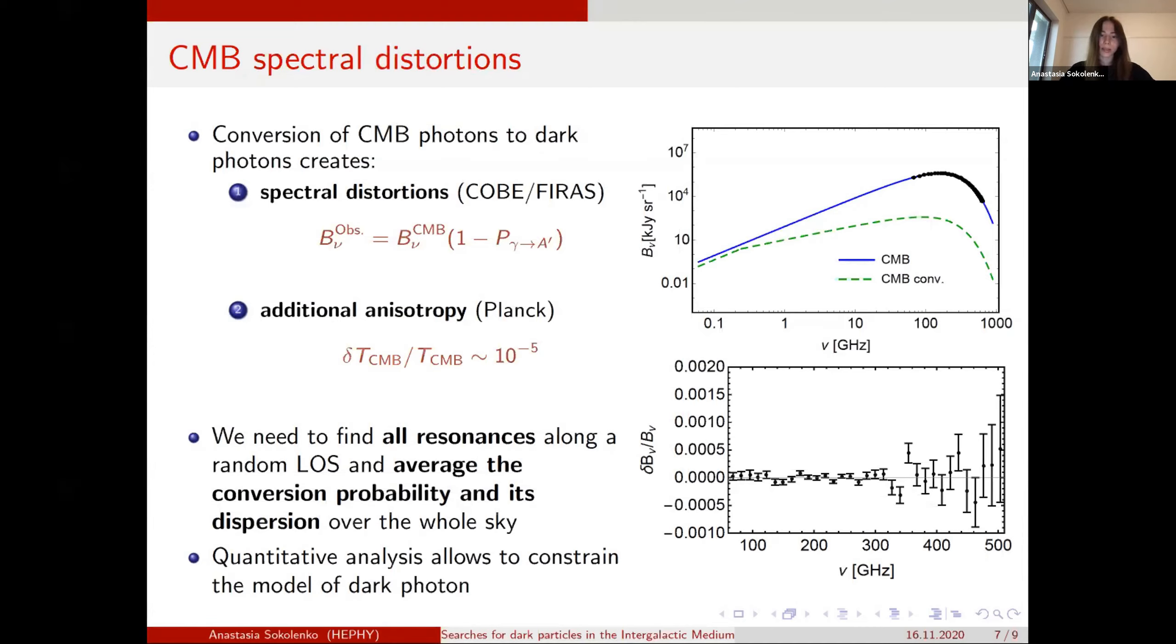And what we can do is that we can put some strong constraints on dark photon when it propagates through the medium. And for that, we need to take many line of sights and average this line of sight, and average the probability and find its mean and dispersion. In this way, we can constrain only using COBE data and Planck.